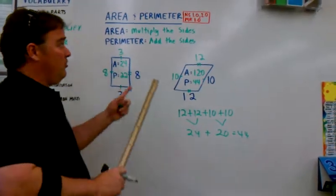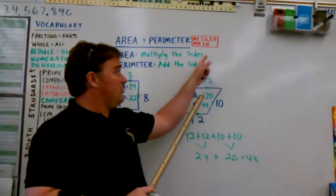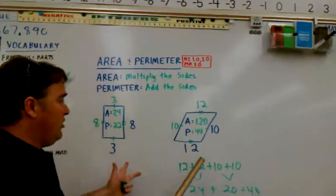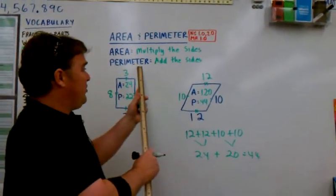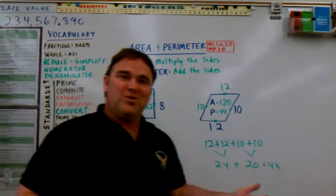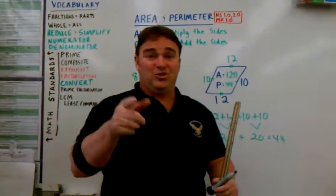There you have it. Area and perimeter. Here's our state standards for all those principals looking out there. And here we go. Simple. Just follow the rules. Area multiply, perimeter add the sides. There you go. Thanks for coming to Mr. Cool's Class. Hope you learned something. Do your homework and have a great day.